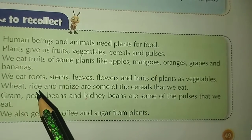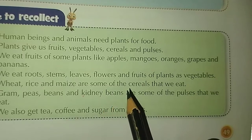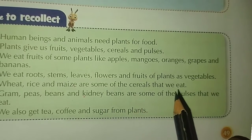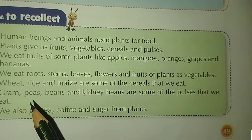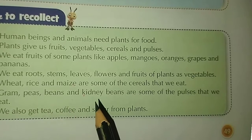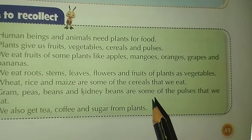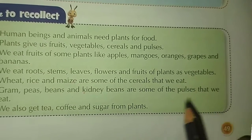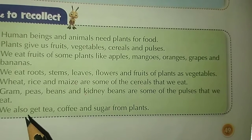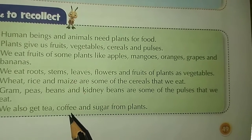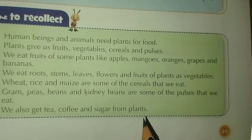Wheat, rice and maize are some of the cereals that we eat. Gram, peas, beans and kidney beans are some of the pulses that we eat. We also get tea, coffee and sugar from plants.